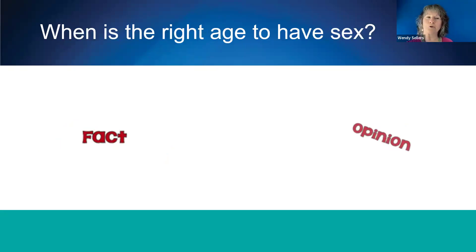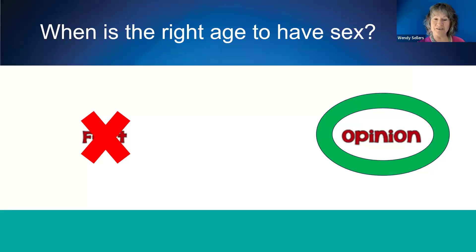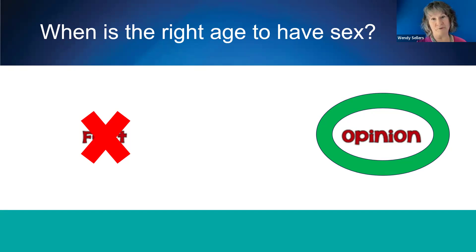Here's our second example question: when is the right age to have sex? Do you think this is a fact or an opinion question? Yes, this is an opinion question, because people have a variety of answers to this and there's no single answer that's based in fact. What word was a clue to this being an opinion question? The word 'right.' If you're asked a question about whether something is right or wrong, that's an opinion question. And it's not your job to share your personal opinion with your students — it's your job to help them think critically and learn how to form their own opinions, values, and beliefs.